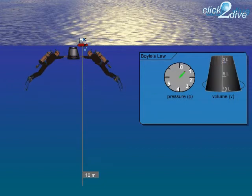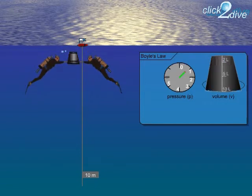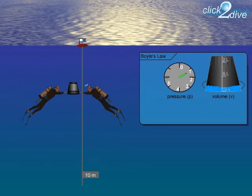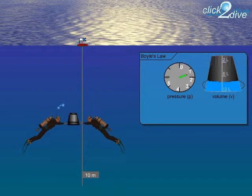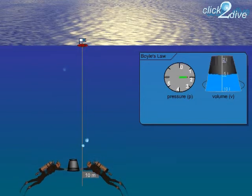We can illustrate this best with our bucket animation. The bucket, which holds 10 litres of air at the water surface, 1 bar, is only half full of air at a depth of 10 metres, 2 bars. 5 litres of air.